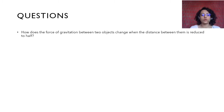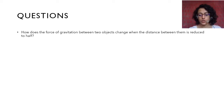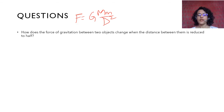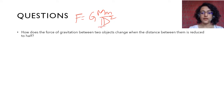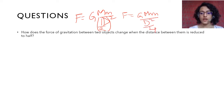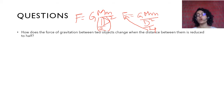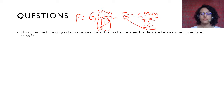The first question is: how does the force of gravitation between two objects change when the distance between them is reduced to half? We know F = Gm₁m₂/d². When d is halved, it becomes d/2, so (d/2)² = d²/4. This means F becomes Gm₁m₂/(d²/4), so the force becomes 4 times. This is called the inverse square law.